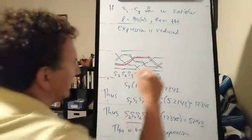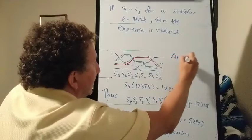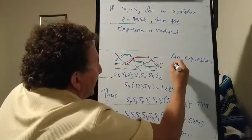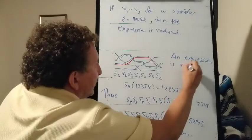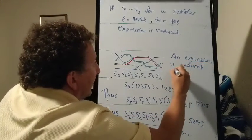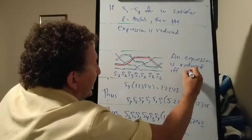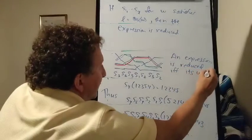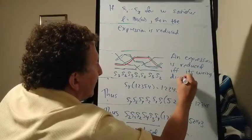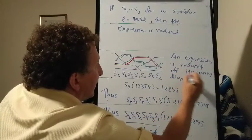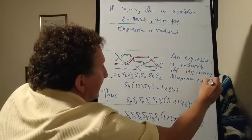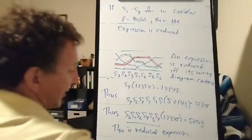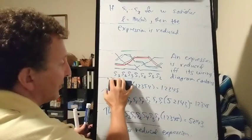In fact, that's an if-and-only-if statement. An expression is reduced if and only if its wiring diagram contains no two paths that intersect each other more than once, that cross each other more than once.